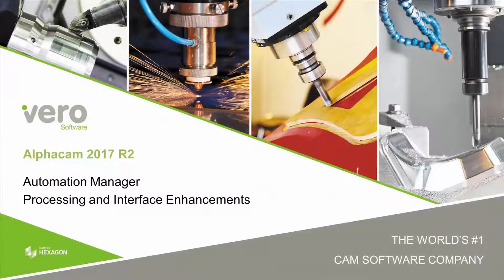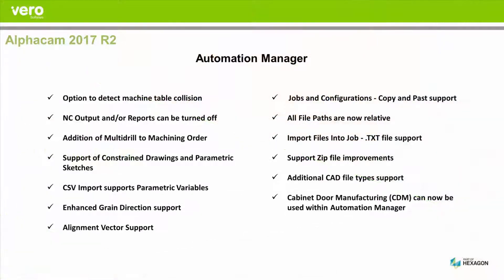In 2017 R2 there have been some improvements made to both processing and the user interface of Automation Manager. Here's a list of the main enhancements. Most significantly, we can now process constrained drawings and parametric sketches.